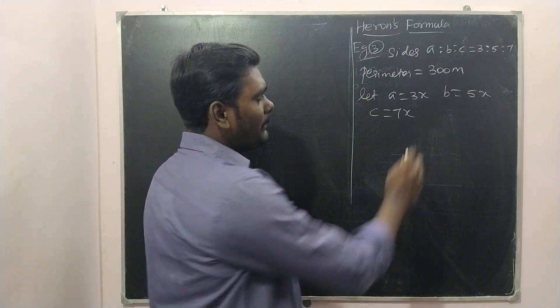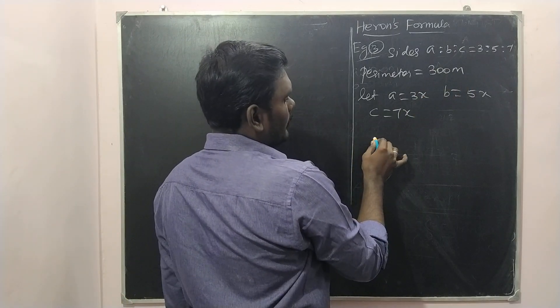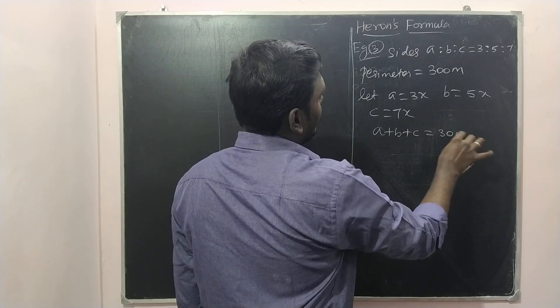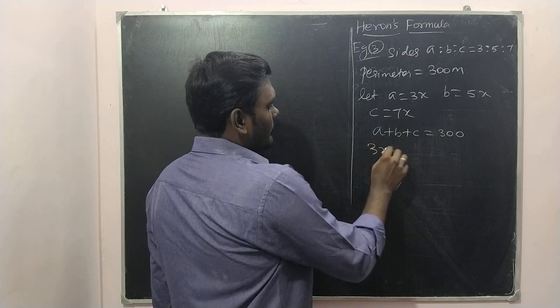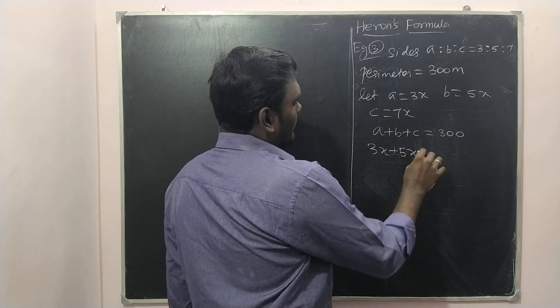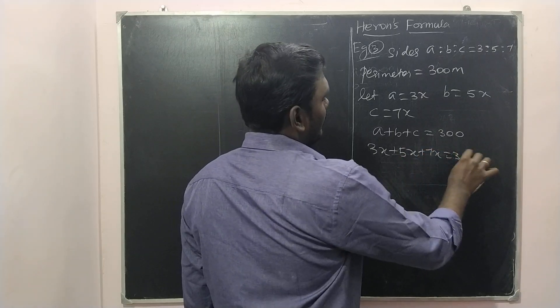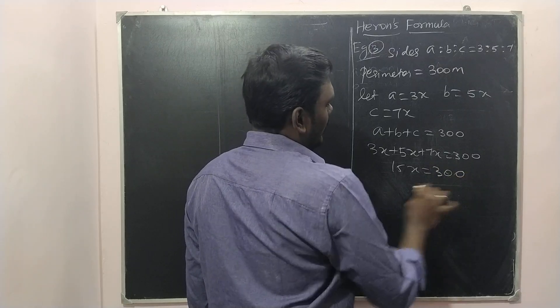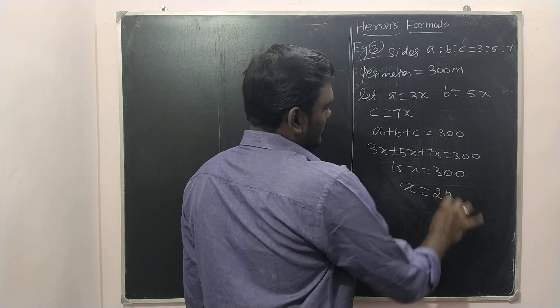Now also given that perimeter is 300 meters. Perimeter means a plus b plus c equals 300. So a is how much? 3x plus 5x plus 7x equals 300. We have 15x equals 300. How much is x? 20.